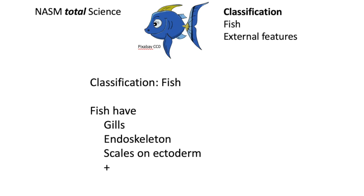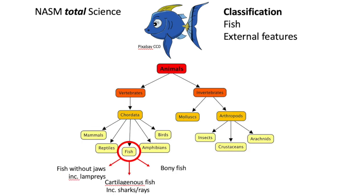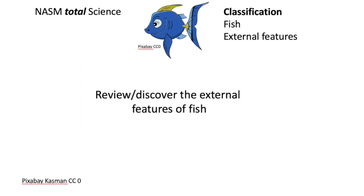an endoskeleton, and scales on their outside. There are three main classes of fish: fish without jaws, the cartilaginous fish like sharks, and the vast majority — the bony fish — with about 30,000 different types. So: review, discover the external features of fish.